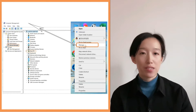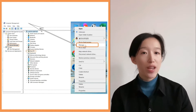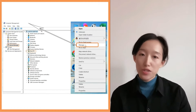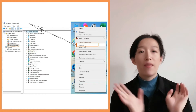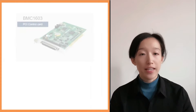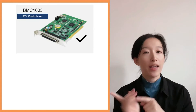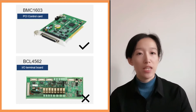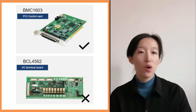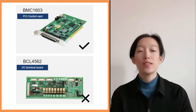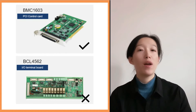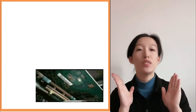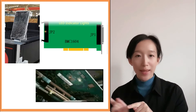In the fourth case, we cannot find the motion control card or PCI device. In this case, we need to check whether the indicator lights of the motion control card are flashing normally. Note that the motion control card here is not the terminal block but the card installed inside the computer. SAP Cat 1000 uses BMC1603 and SAP Cat 2000C uses BMC1604.